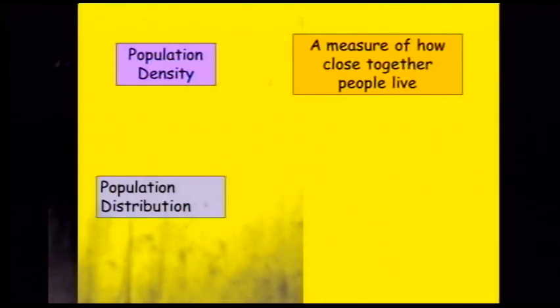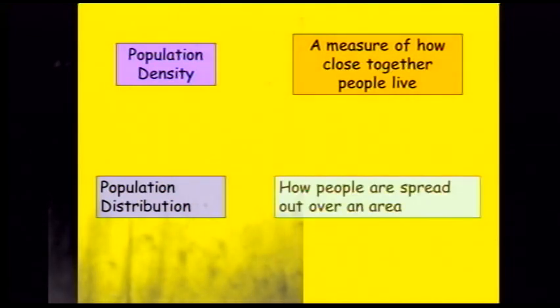Population density is simply a measure of how close together people live, and population distribution is how the people are spread over an area.